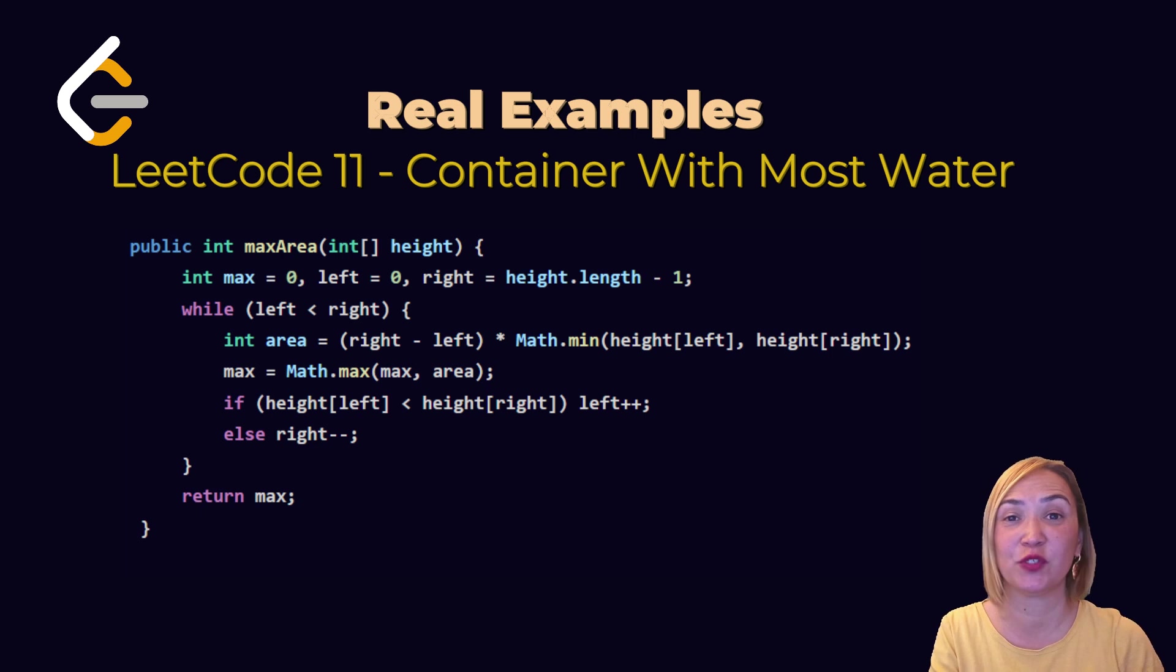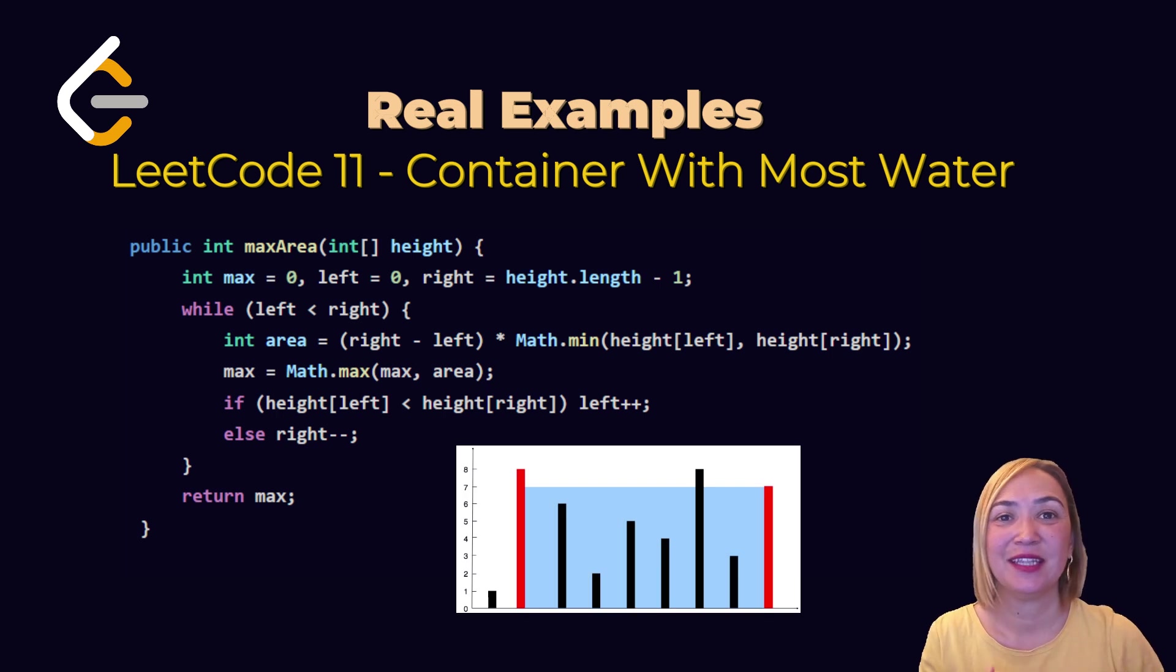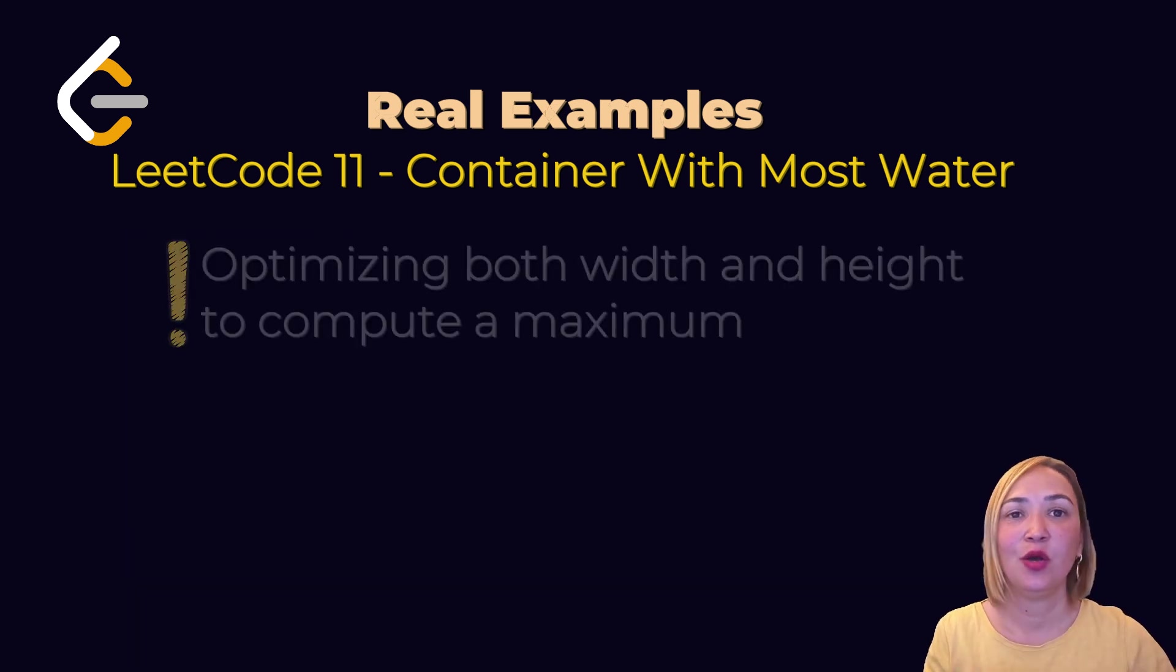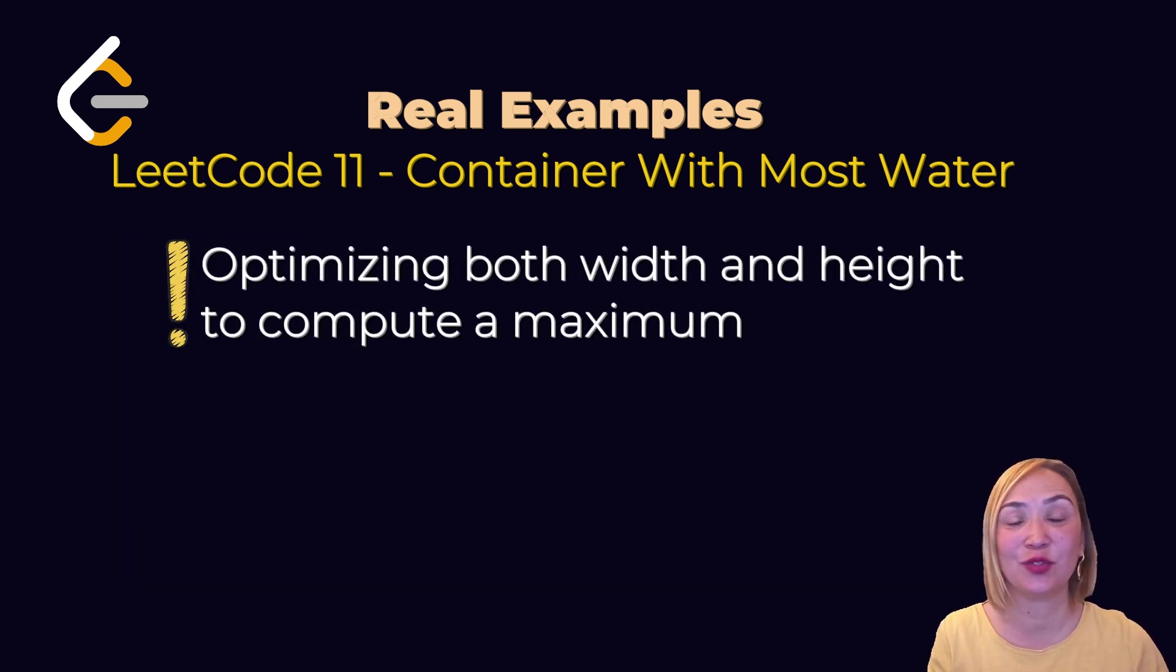Container with most water: Maximum area depending on width and height. Always move the shorter line. Two pointers, left and right. Calculate the area and always keep the maximum area. If height left less than right, increment left. Or increment right. Optimizing both width and height to compute a maximum.